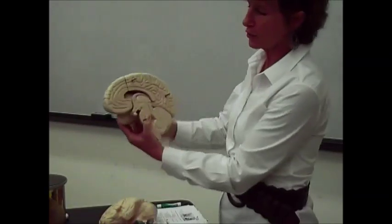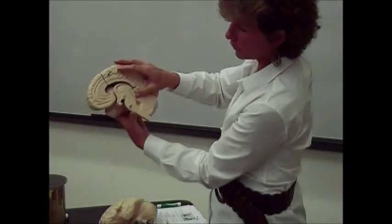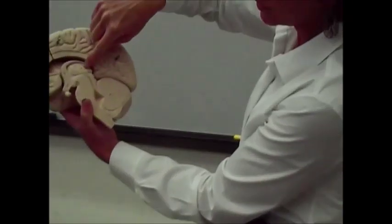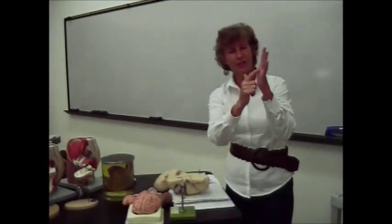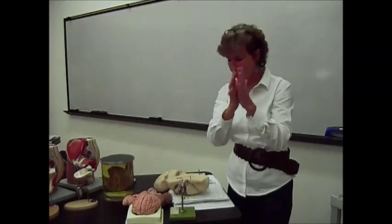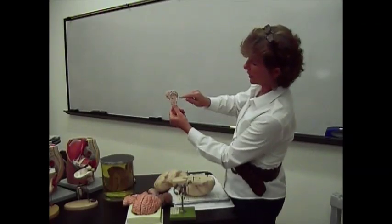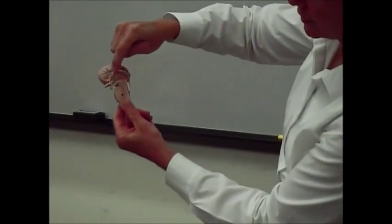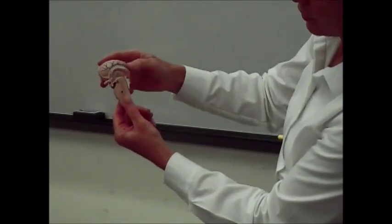The third ventricle sits on the outside of the thalamus — it's a little flat space, almost like two hands pressed together with a small indention. The pineal gland has its tail going up into that third ventricle. So you have the thalamus, the hypothalamus, the pituitary gland on the anterior side, and the pineal gland with its tail coming up into the third ventricle on the posterior side.